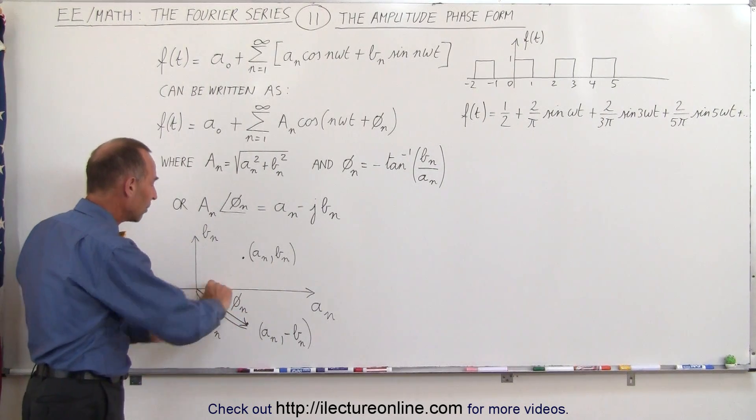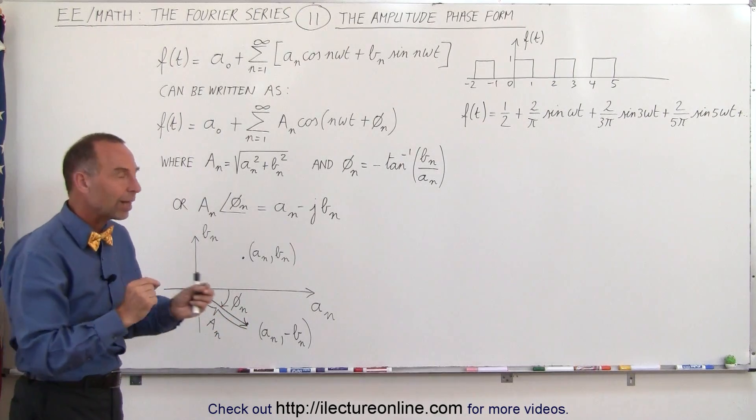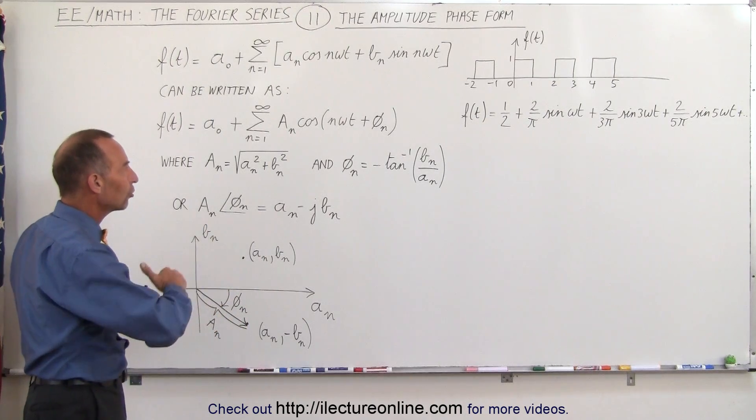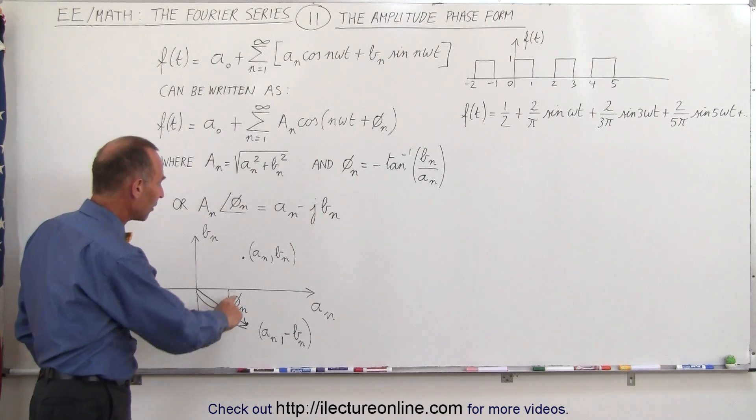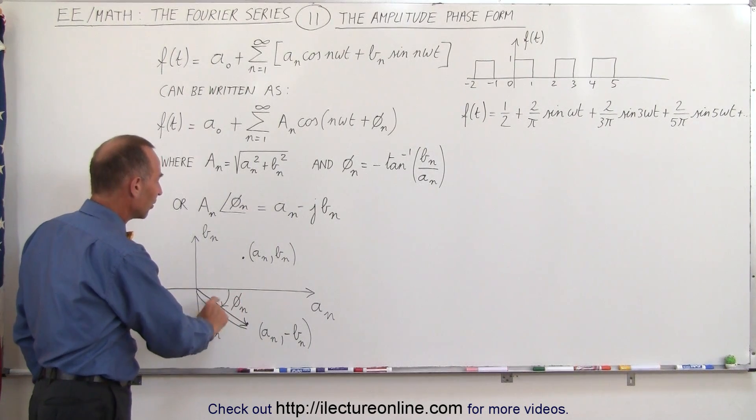If the b sub-n is much larger than the a sub-n, we have a large phase angle. So it's the relative difference between the cosine and the sine terms, and that allows us to find that phase difference depending upon the magnitude of a and b.